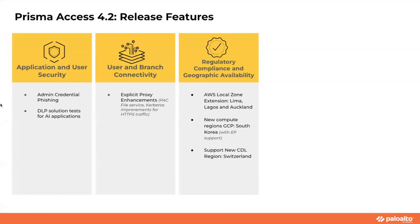On the screen you can see three different pillars that I've broken down the features in. Going left to right, I'll walk you through the high-level features and then we'll dive into the details. On the first pillar, you see application and user security. Two new capabilities were launched: first is admin credential phishing, our capability to help prevent customers and employees from submitting passwords to illegitimate sites and protecting their credentials. The other is DLP solution tests for AI applications, covering what kind of data goes to these AI applications.